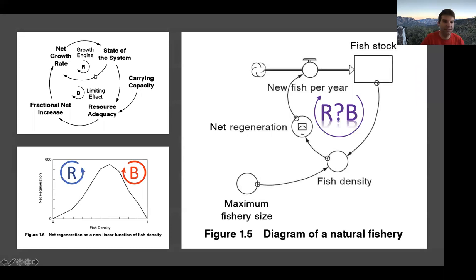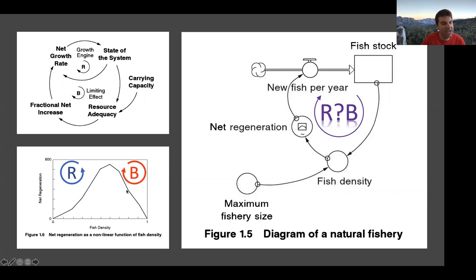The problem is there are a bunch of different ways to draw these models. In the fisheries example from chapter 1, the diagram has a single feedback loop and it's not clear where the reinforcing loop or the balancing loop is — it's not clear how the S-shaped growth even works. We know that if we look in the net regeneration lookup table — the positively sloped part is the reinforcing part and the negatively sloped part is the balancing part — but it's not very compelling to have these tied up in a lookup table.